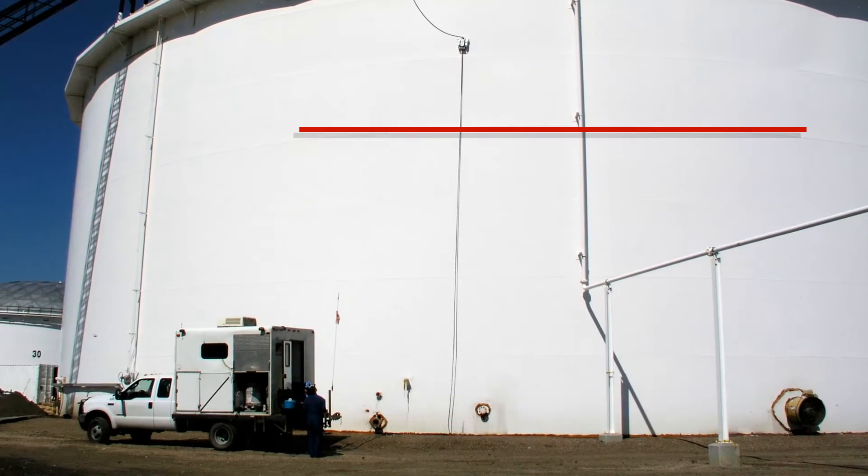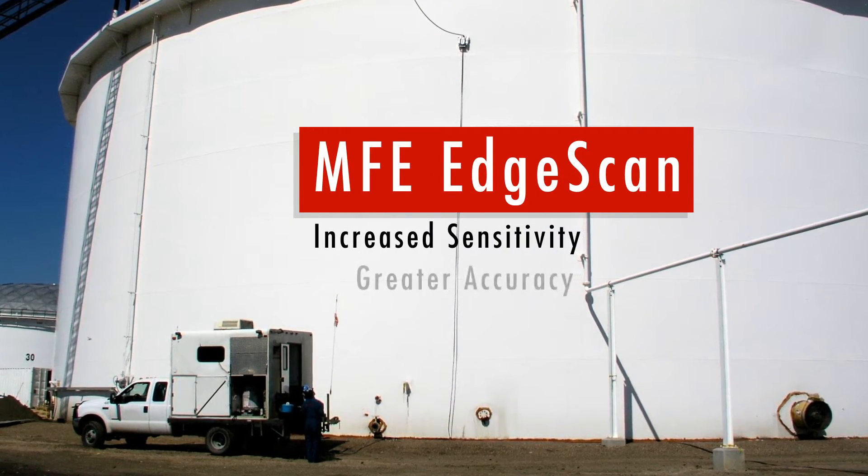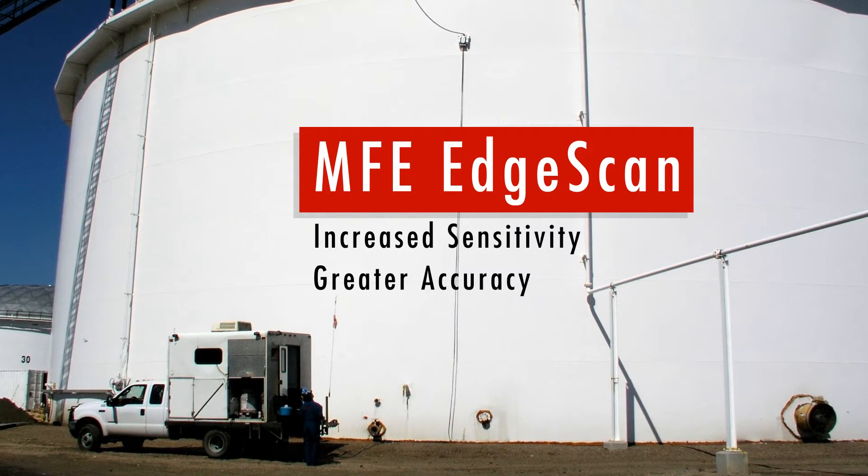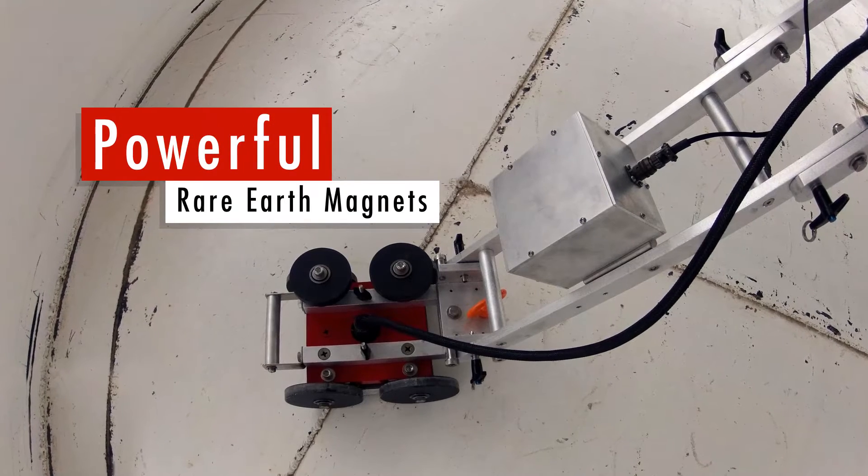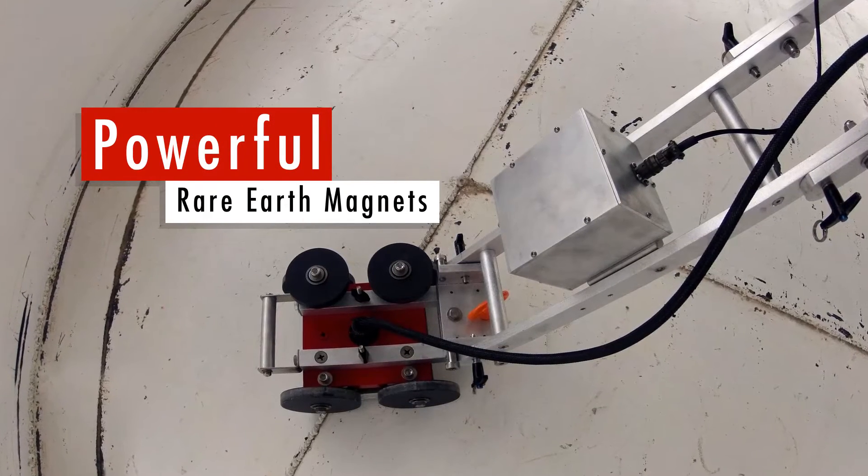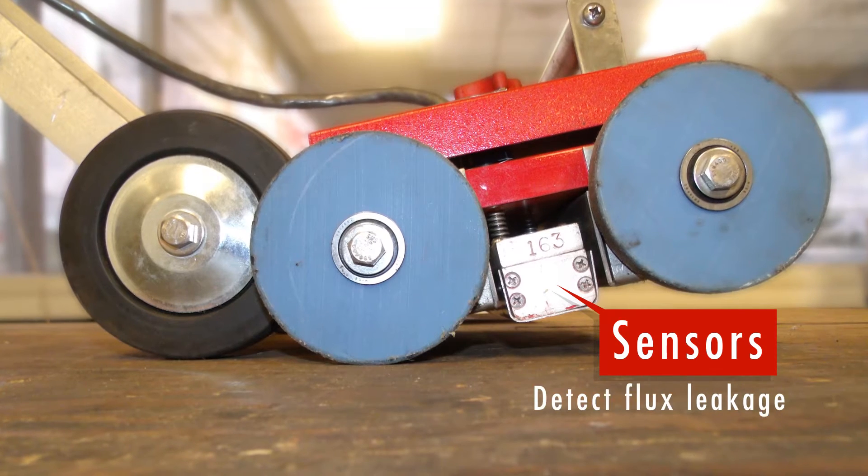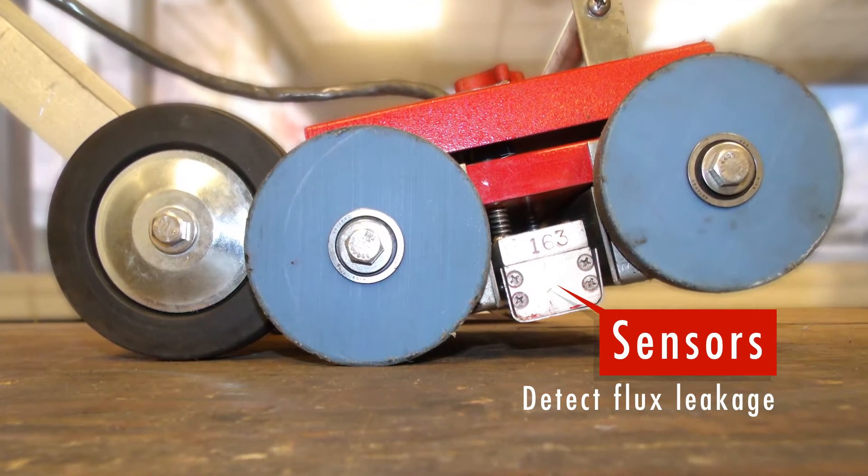Improving over previous models, the edge scan offers increased sensitivity and greater accuracy than any other MFL scanner before it. The magnetic bridge contains powerful rare-earth magnets to magnetize and saturate the tank floor plates, while sensors attached to the unit detect flux leakage caused by volume loss.